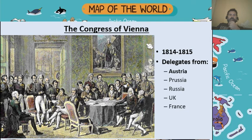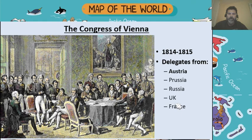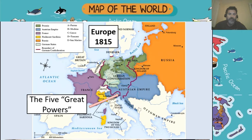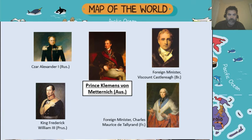Once Napoleon was gone — and actually this happened after his first defeat at the Battle of Leipzig in 1814 — a new conference was called together called the Congress of Vienna. This was made up of delegates from the five great powers of Europe at the time: Austria, Prussia, Russia, the United Kingdom, and France — but France of the Bourbon dynasty, not Napoleon's France. These five great powers — the Austrian Habsburg Empire, the Russian Empire, the Kingdom of Prussia, France under Louis XVIII, and the United Kingdom — were led and organized by Prince Clemens von Metternich, the foreign minister of the Austrian Habsburg dynasty. Even the Tsar of Russia himself was there — this was a big deal.